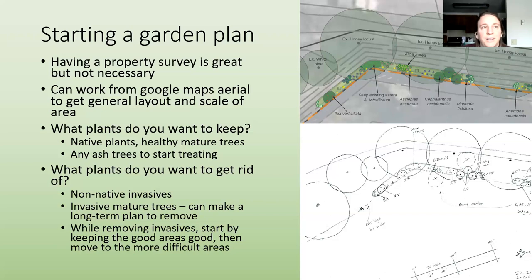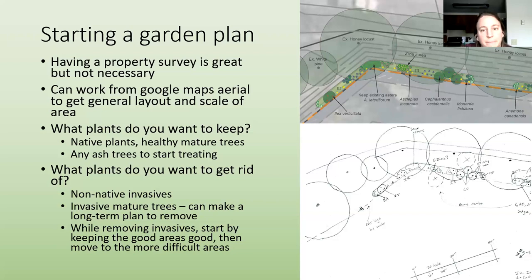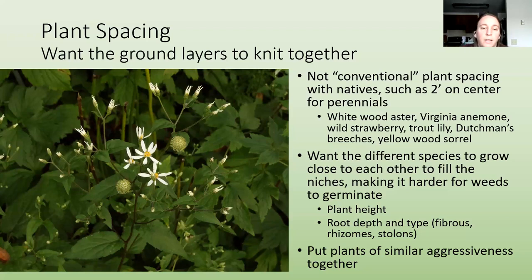Removing invasives can be really hard, so if it takes a long time in one area, you don't want to lose other areas while you're working on that. For plant spacing, it's not the conventional two feet on center for perennials — you want all the layers to knit together, even in the perennial and ground layer. In this picture you can see whitewood aster flowering, with seed heads of Virginia anemone forming.